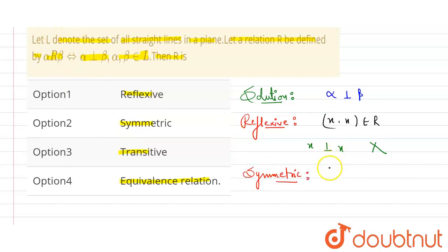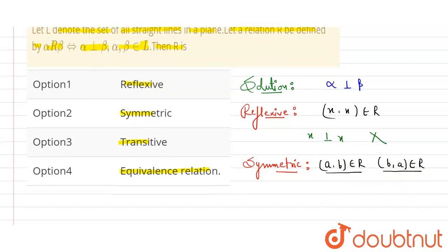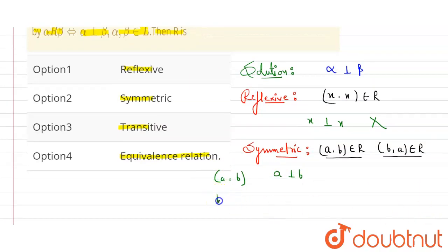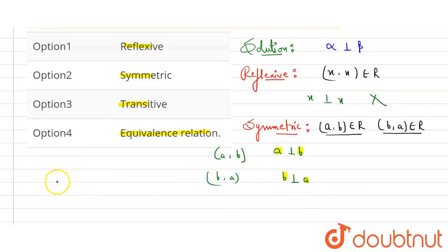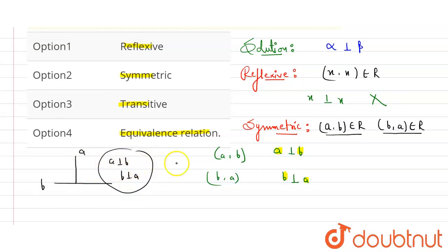Now let's check for symmetric. Symmetric means: suppose I have (a, b) belonging to the relation, then (b, a) should also belong to the relation. According to the equation, a is perpendicular to b. Now check for (b, a): b is perpendicular to a. If a line is perpendicular to another line, that line is also perpendicular to it. For example, if line a is perpendicular to line b, then b is also perpendicular to a — both are the same.